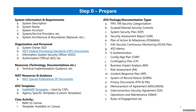A typical scenario: an agency implements everything from steps one through three, and now it's time for assessment by a 3PAO or internal assessors. But because there was no planning phase, nobody identified who the assessor or auditor should be, resulting in downtime while everyone scrambles to find an assessor.